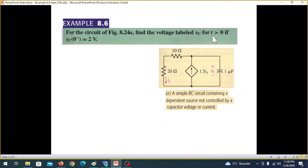For t greater than 0, if VC not, that is the initial value, is equal to 2 volt.